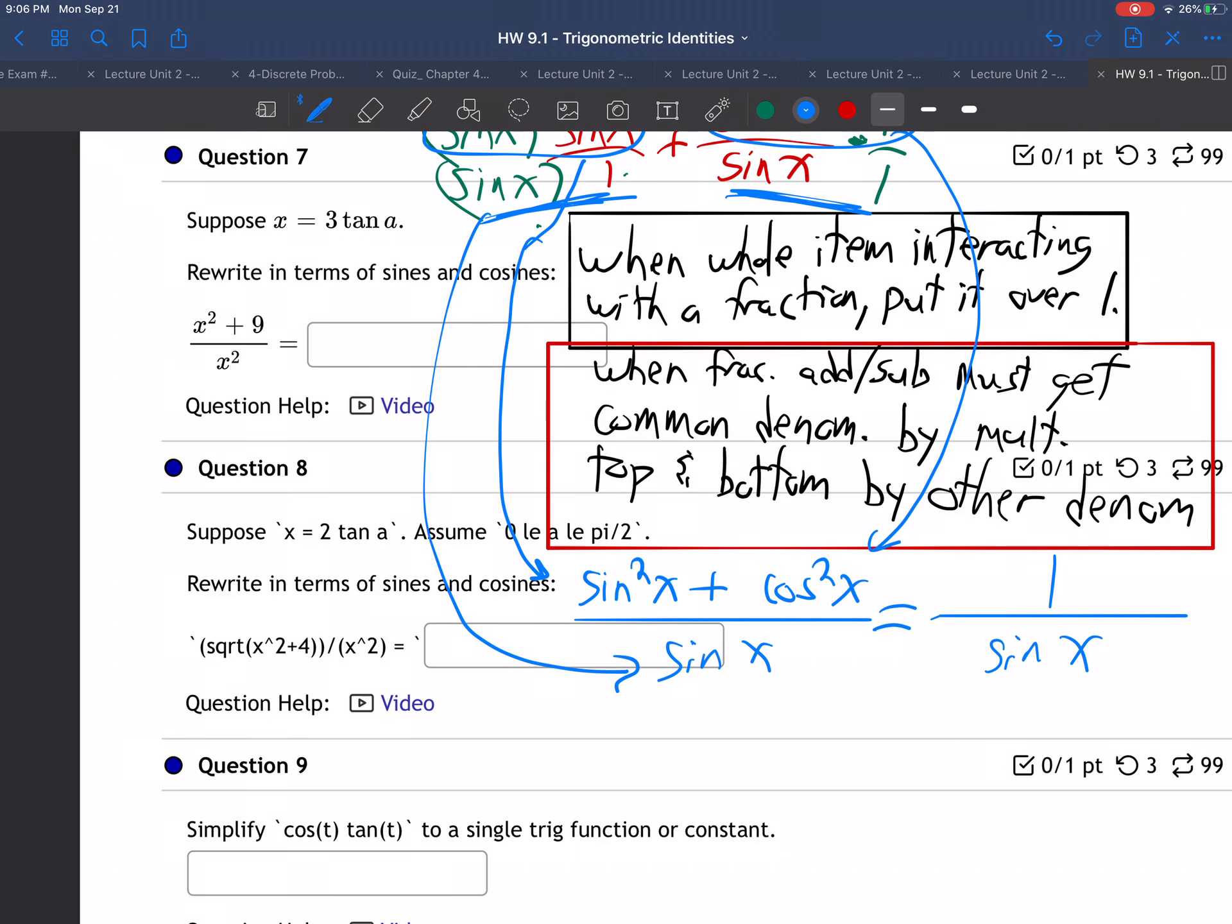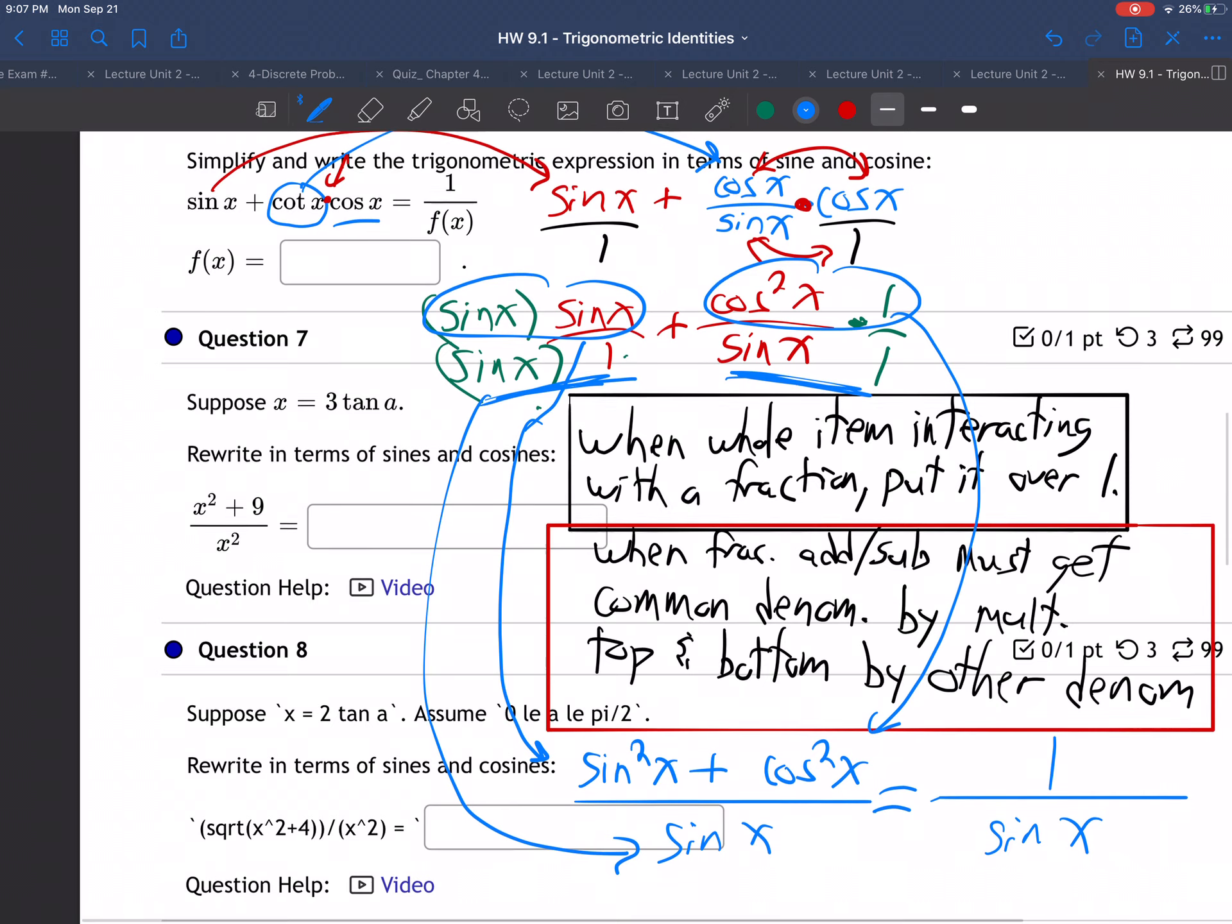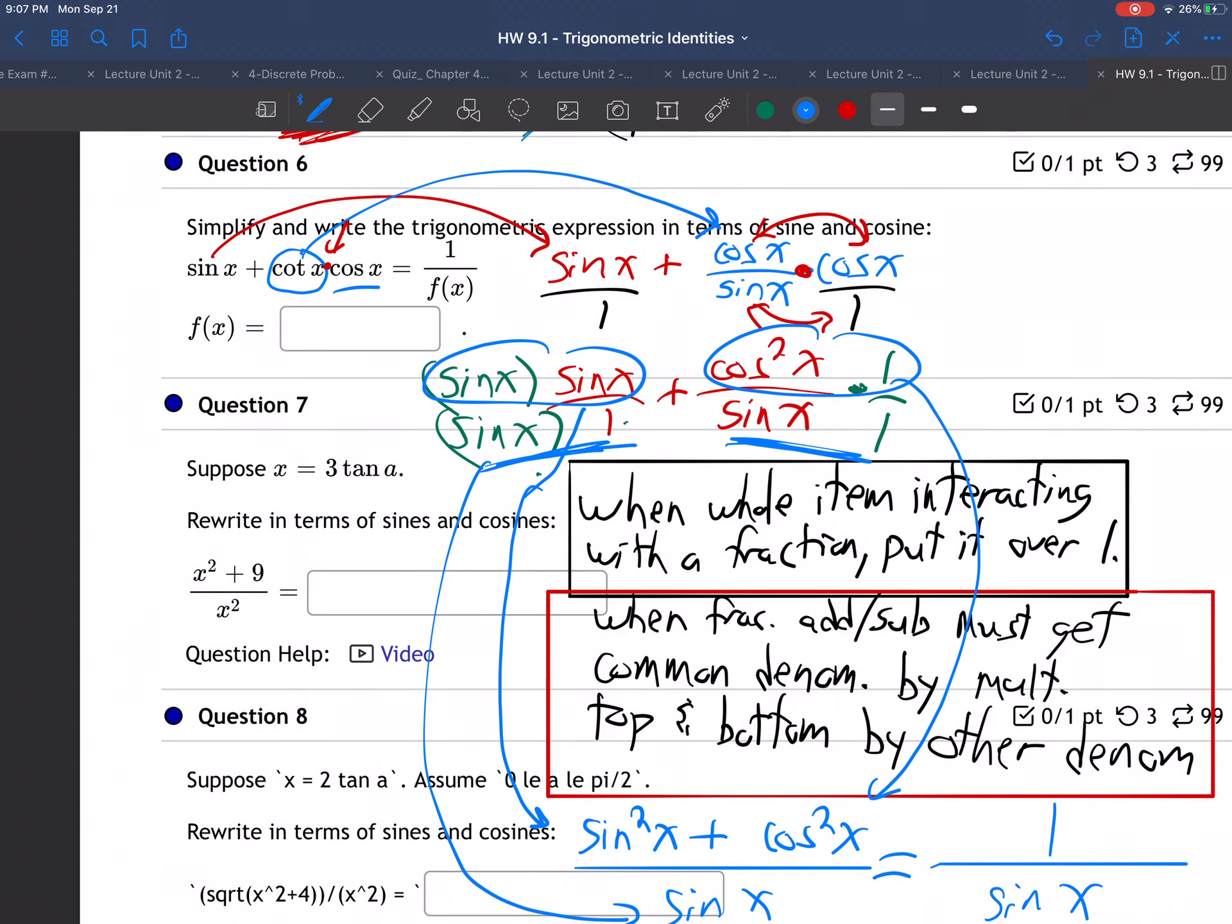Okay. So this is therefore one over sine x. Do you see that? This thing has simplified a lot, hasn't it? And so our answer, see how they're saying the answer back here? Here's the beginning question. They're saying the answer is going to be one over some kind of function. Tell us what that function is on the bottom. So we just say sine of x. Does that make sense?